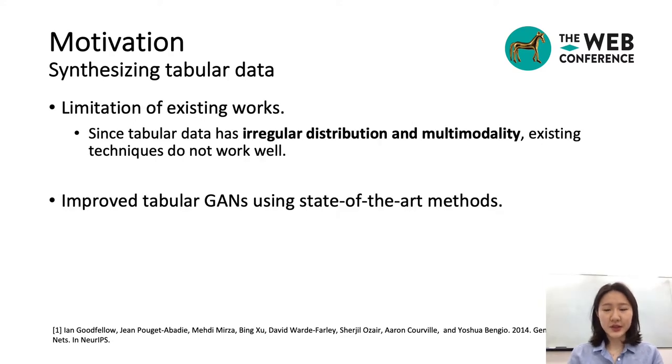Tabular data usually has an irregular distribution and multimodality in many cases, and existing techniques of synthesizing tabular data do not consider these properties and have room for improvement. Considering these properties, we designed the conditional tabular GAN, an improved version of existing tabular GAN models. Using state-of-the-art methods like neural ordinary differential equations, its layers learn and solve ordinary differential equations, and thus we named it OCTGAN.